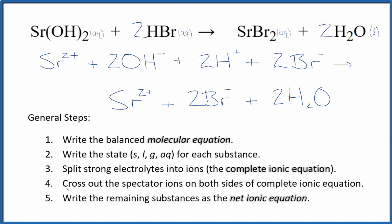So at this point, we'll cross out the spectator ions. They're on both sides of the complete ionic equation. In the reactants, I have the strontium ion. I also have that in the products. That's a spectator ion. We're going to cross that out. I have two bromide ions in the reactants and in the products. These are spectator ions. We can cross those out.